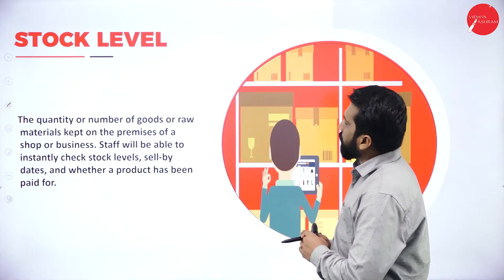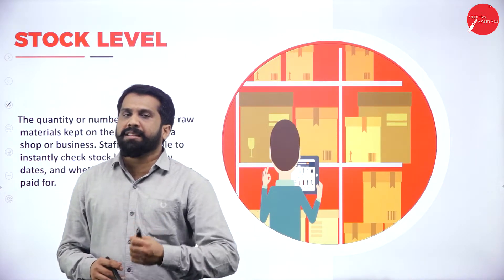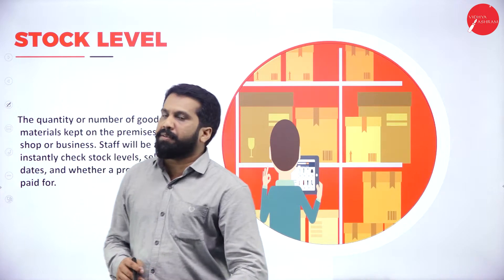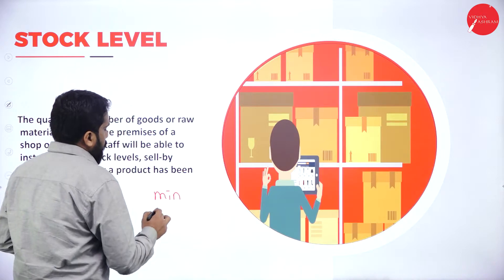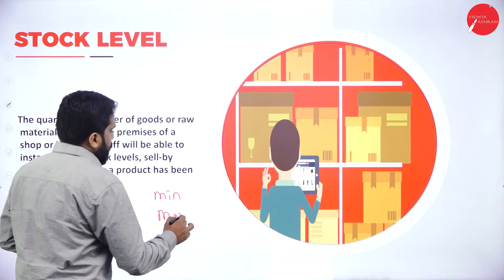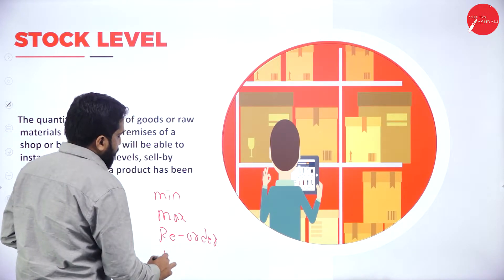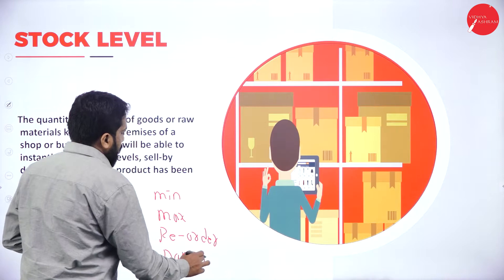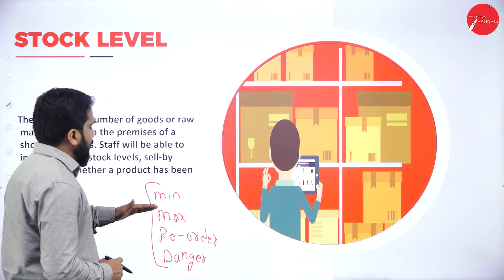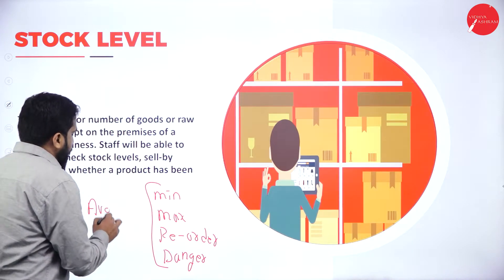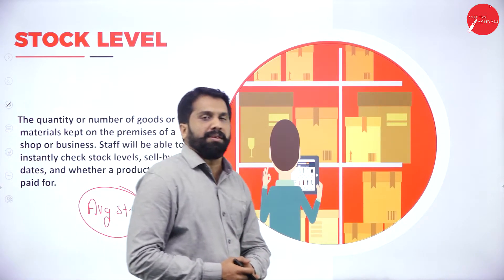Now, stock level. Stock level was already explained; I'll just revise and recall. Normally we have minimum stock level, maximum stock level, reorder stock level, danger stock level, and average stock level — so total five stock levels.